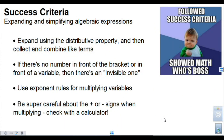Let's sum things up with some success criteria. Start by expanding using the distributive property to multiply into the brackets to get rid of them, then collect and combine like terms. If there's no number in front of the bracket or variable, there's an invisible 1 — write it in if it helps. When multiplying variables, use exponent rules and add the exponents. The main errors students make are keeping track of plus and minus signs, so be very careful, double-check your work, and you can even use a calculator to avoid mistakes. I hope this video has made expanding and simplifying algebraic expressions clearer. Thanks for watching.